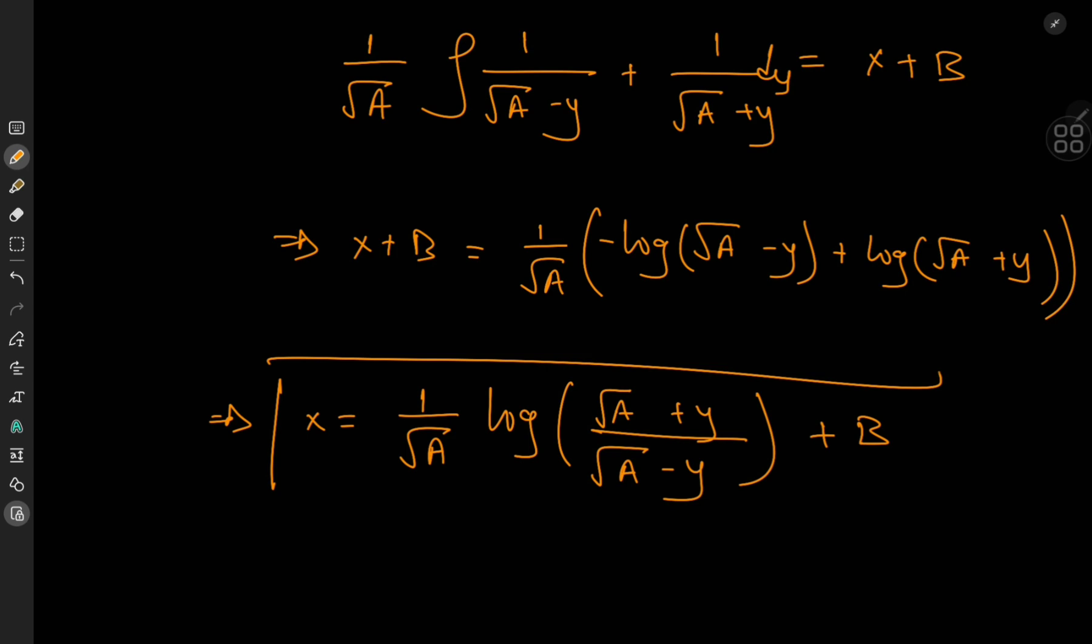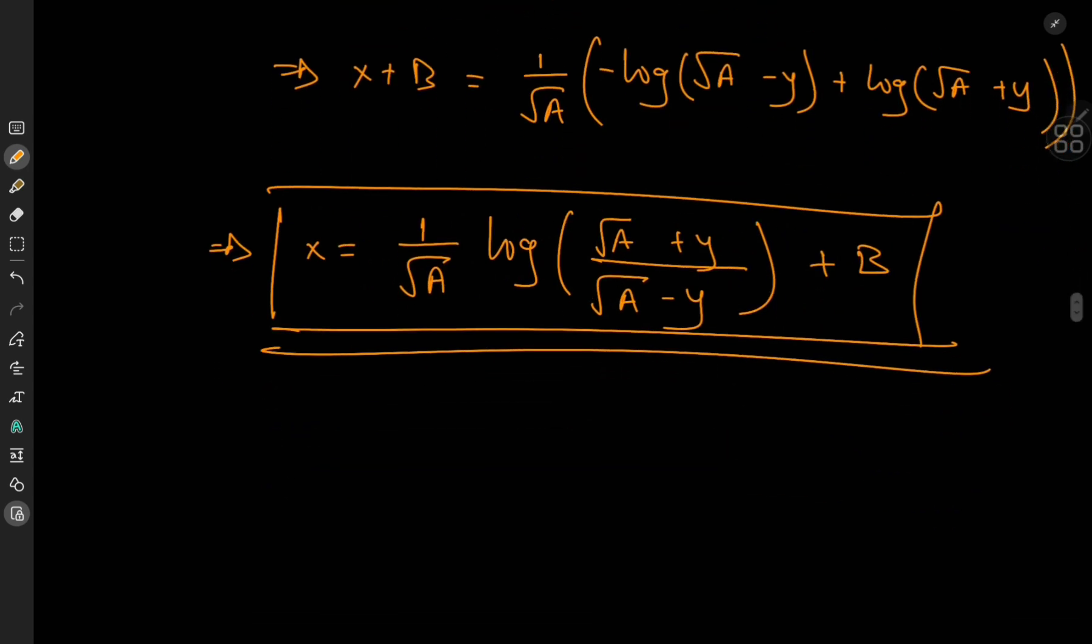And here we have an explicit solution of x in terms of y. So there are two possible solutions. One is a function y satisfying this equation, and the other would be the solution y equals some constant c, which is of course quite boring, but still a solution nonetheless.